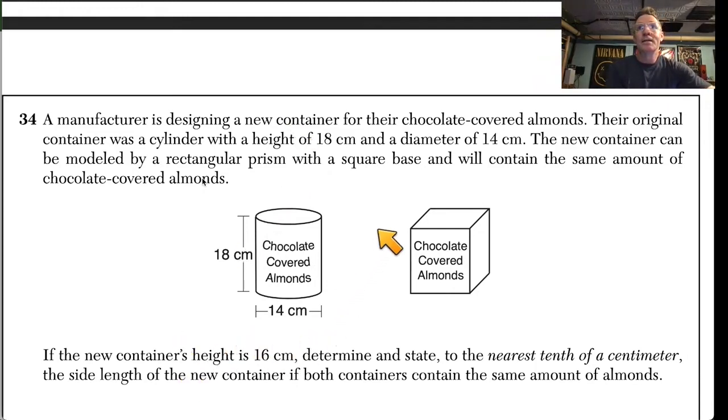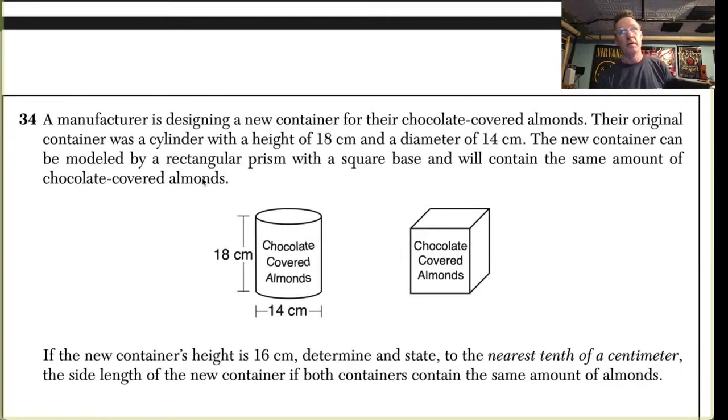The new container's height is 16. State to the nearest tenth the length of the new container, the side length. The first thing I'm going to do—if you had no idea what to do, if you just find the volume of this thing you're probably going to get half credit. That's actually true. So the radius of this thing is 7.